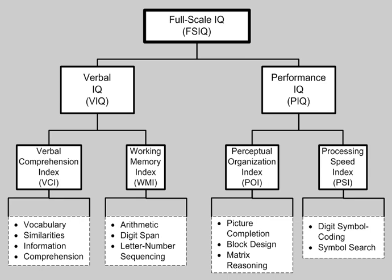In the Binet Scales, items were grouped according to age level. Each of these age levels was composed of a group of tasks that could be passed by two-thirds to three-quarters of the individuals in that level. This meant that items were not arranged according to content. Additionally, an individual taking a Binet test would only receive credit if a certain number of the tasks were completed. This meant that falling short just one task required for the credit resulted in no credit at all. For example, if passing three out of four tasks was required to receive credit, then passing two yielded no credit.